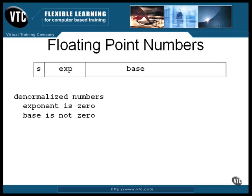Another special case is zero. With the exponent set to zero and the base number set to zero, the value is assumed to be zero. Notice that the sign bit has no effect on this. It's possible to have either a positive or negative zero.